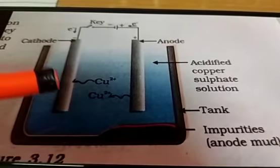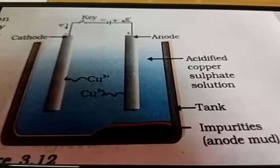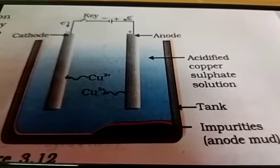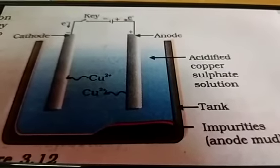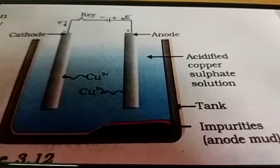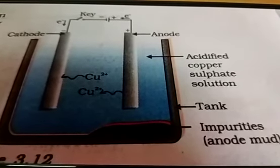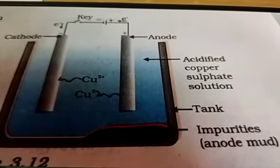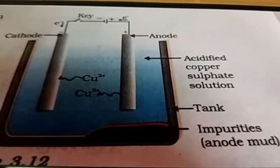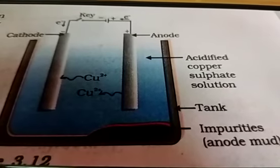An equivalent amount of pure metal from the electrolyte is deposited on the cathode. The soluble impurities go into the solution, whereas the insoluble impurities settle down at the bottom of the anode and are known as anode mud.